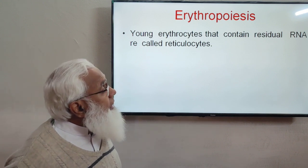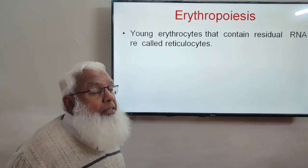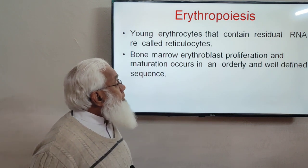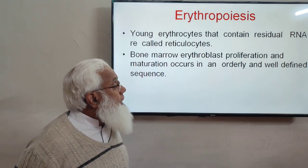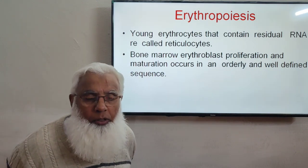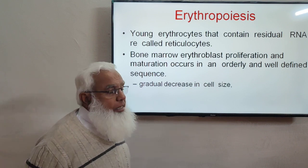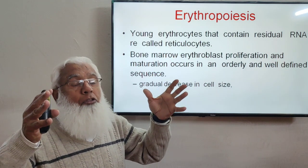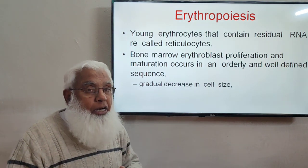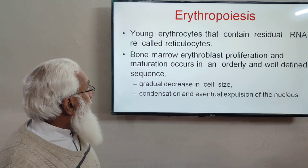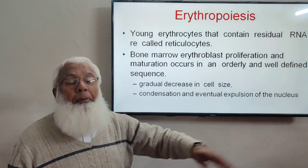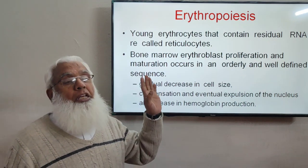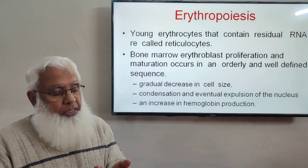Young erythrocytes that contain residual RNA just before entry into the blood are known as reticulocytes. Bone marrow erythroblast proliferation and maturation occur in an orderly, well-defined sequence. There is a gradual decrease in cell size, condensation, and eventual expulsion of the nucleus, along with a gradual increase in hemoglobin production. Initially there is no hemoglobin, and with advancing stages, hemoglobin synthesis occurs.